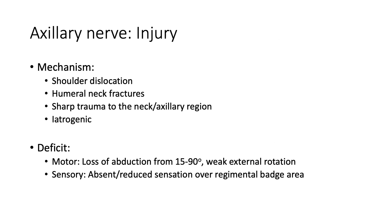For any nerve injury, you need to know the mechanism that causes it and the resulting deficit. Common mechanisms for axillary nerve injuries are shoulder dislocation, humeral neck fractures, sharp trauma to the neck or axillary region, and iatrogenic causes such as surgery. The motor deficit in an axillary nerve injury is loss of abduction from 15 to 90 degrees and weak external rotation. The sensory deficit is absent or reduced sensation over the regimental badge area.